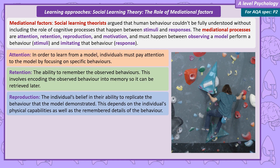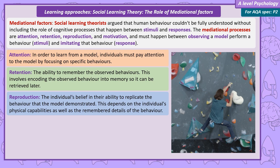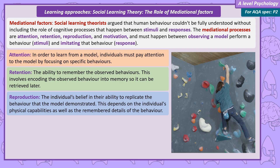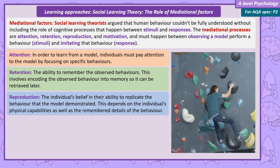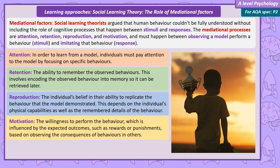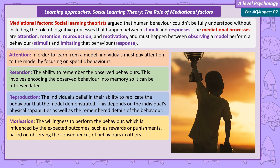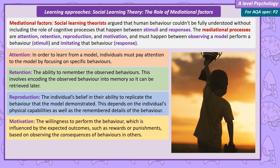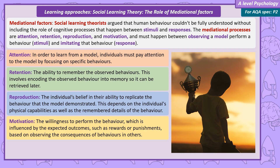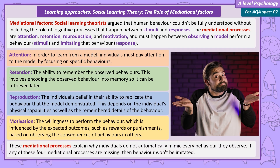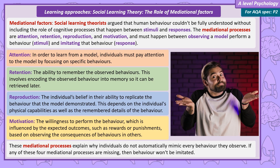Reproduction — this is what students tend to get wrong. These are all internal mental processes, so this is about thinking if I can do the same behavior. If the behavior seems too complex, or I don't have the strength or ability to perform the behavior, I'm not going to try to reproduce it. Motivation: if I've paid attention, retained the information, and believe I can reproduce the behavior, finally I need to consider if I actually want to. This includes thinking about how performing this behavior will affect me and if I'm going to receive any potential rewards or punishments. Mediational factors affect behavior because if any of these four mediational processes are missing, then the behavior won't be imitated.